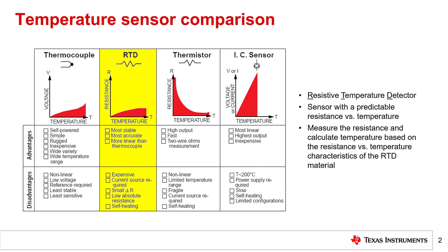Some of the benefits of an RTD is that they are the most stable and accurate temperature sensor. These two qualities enable RTDs to be used in many precision applications. RTDs are also highly linear, providing the user with a predictable relationship between sensor resistance and measured temperature. RTDs also have some disadvantages, such as requiring an external source to bias the sensor. Another challenge is that the change in RTD resistance is relatively small, resulting in a small output voltage.